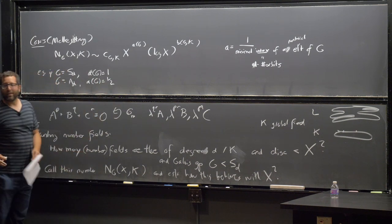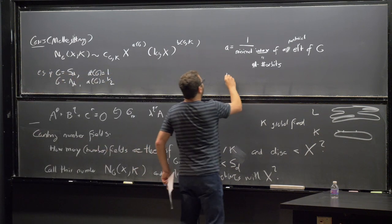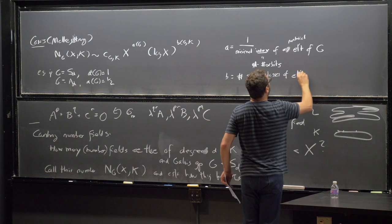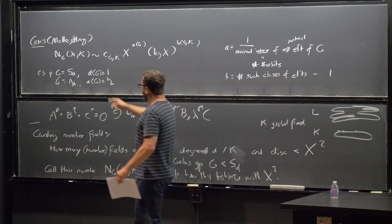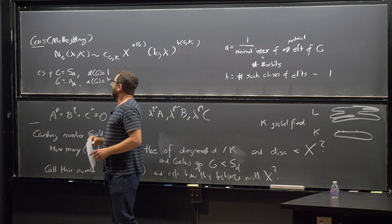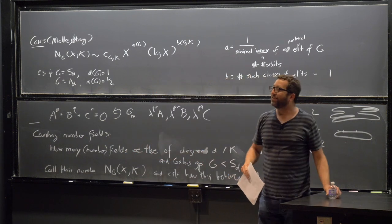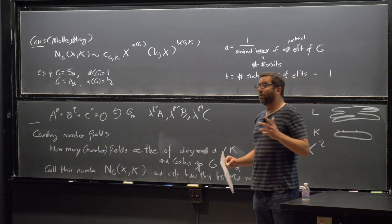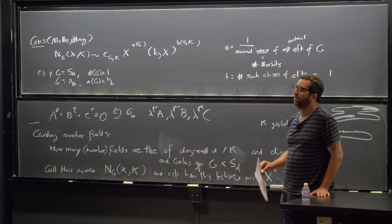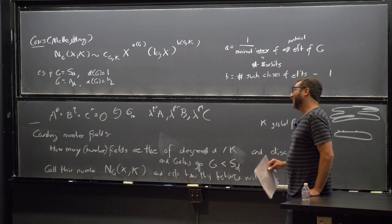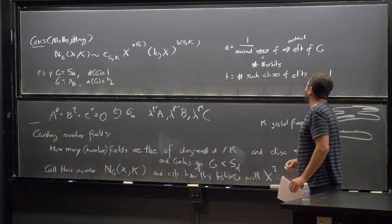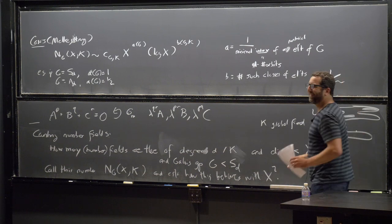And b equals the number of such conjugacy classes of elements achieving the minimum index, minus 1. In the S_D case, there's a unique conjugacy class of transpositions, so this log factor doesn't arise. In particular, what this predicts is that if I count the number of S_D extensions of Q with discriminant at most x, the number of those is asymptotic to x times a constant. You have to be a bit careful about b depending on K — it's really up to a cyclotomic action depending on how many roots of unity are in K.